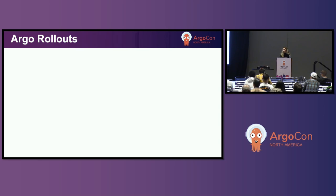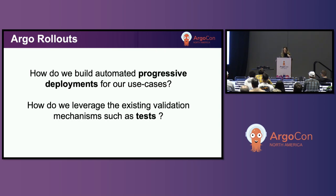Why Argo Rollouts? Because it's cloud native, very easy to learn and understand, and it lets you configure every type of progressive deployment out there. But the flexibility of Rollouts in terms of what you can configure raises the question: what do we configure for our use case? What's the best strategy? And it was important for us to leverage the existing mechanisms we had, like our tests.